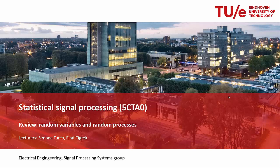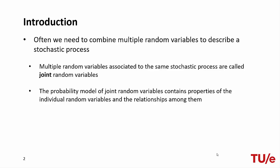Welcome to this screencast in which we discuss random vectors. As we have seen for pairs of random variables, often we need to combine multiple random variables in order to describe a random process. Multiple random variables which are associated to the same random process are called joint random variables.